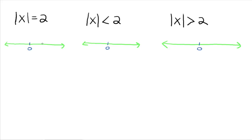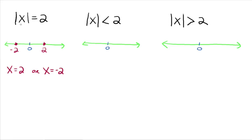Well, there are two of them: 2 and negative 2. Hence, there are two solutions to this equation — x equals 2 or x equals negative 2. Take either one of those numbers and plug them in for x, and you've got a true statement.